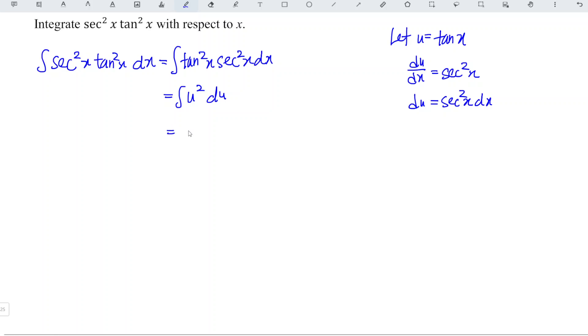When we integrate, we use power plus 1 over power plus 1 plus constant C. So we have u³/3 + C. What is u? u is tangent, so we get tan³x/3 + C, and we're done.